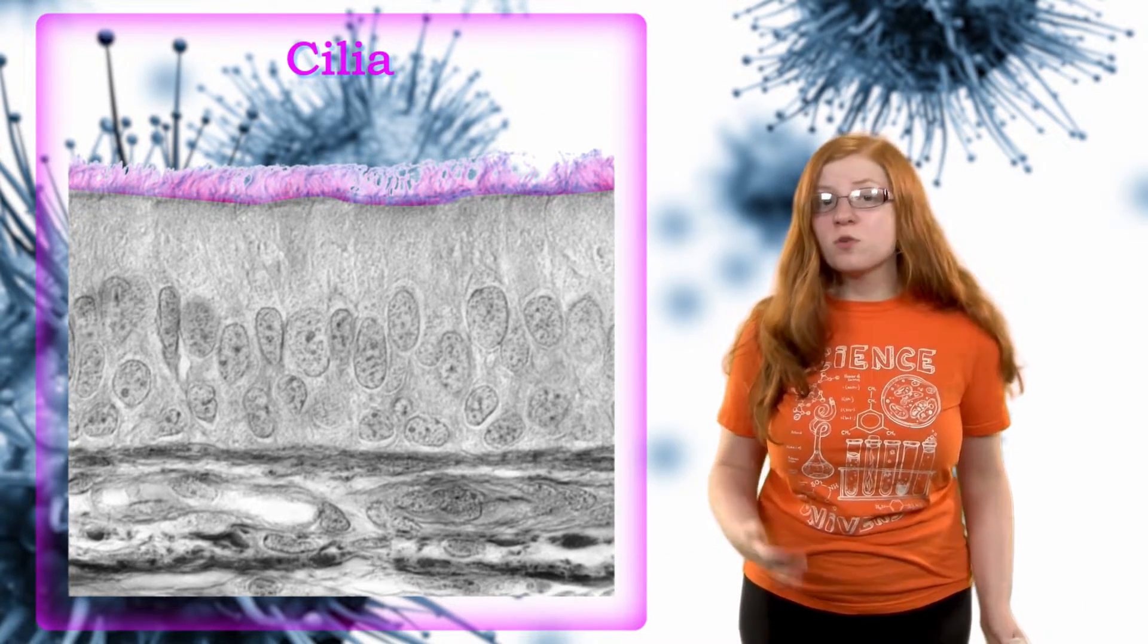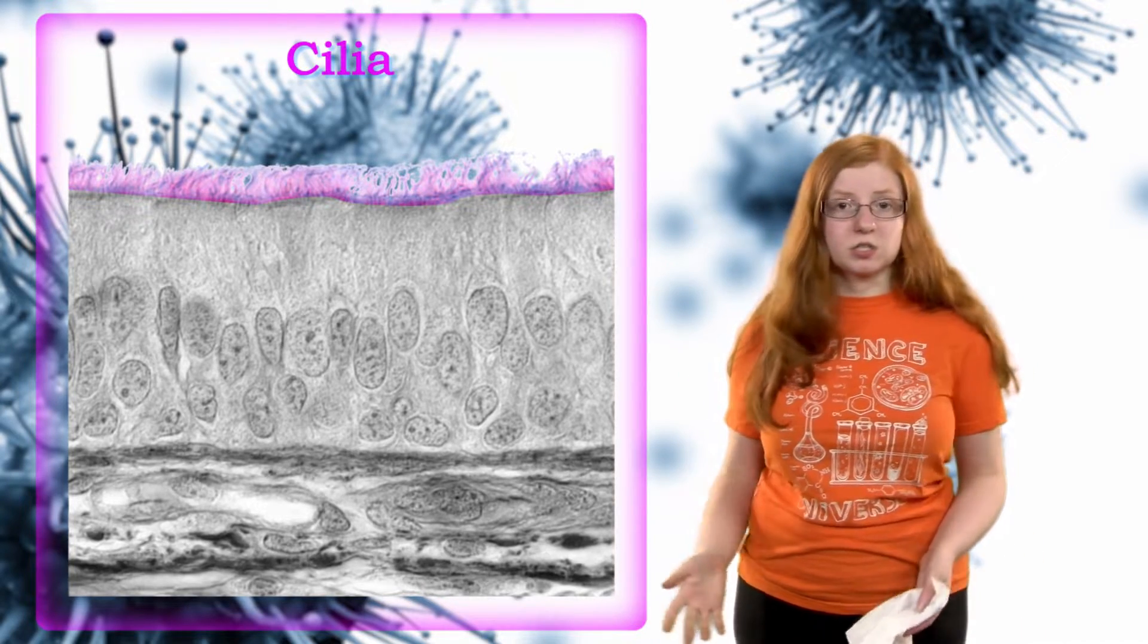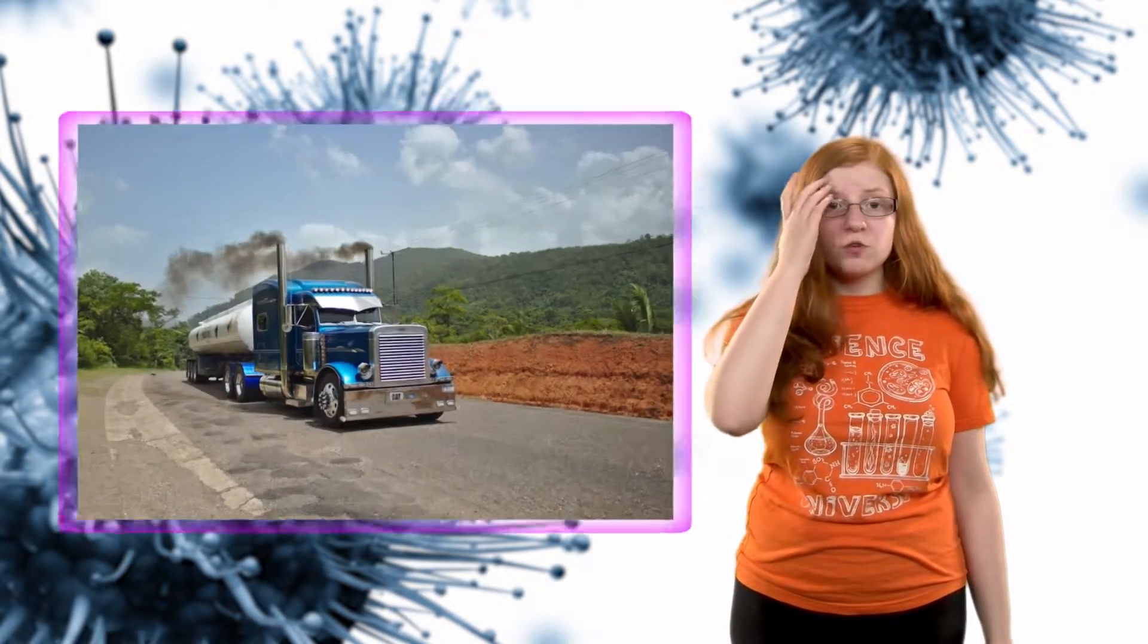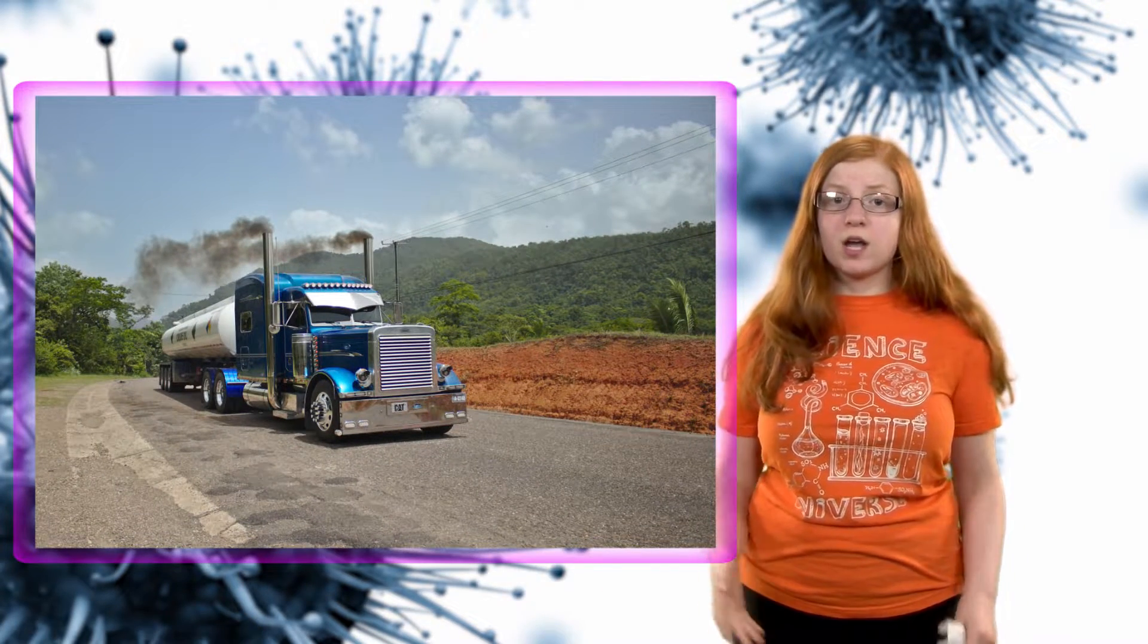You can't remove the cilia because they're microscopic and on your cells. But they can be destroyed by diesel fumes, cigarette smoke, and other pollutants. The way they work is the mucus first captures the virus particles, and then the cilia move the mucus to your stomach.